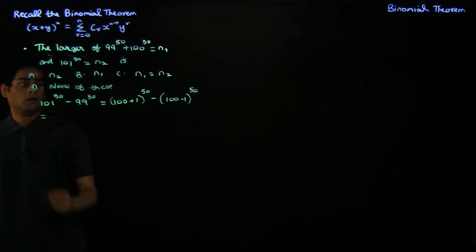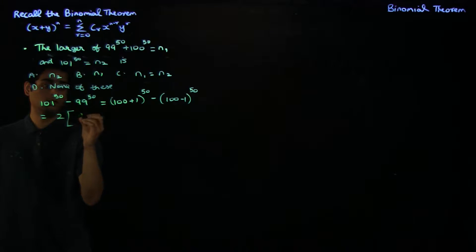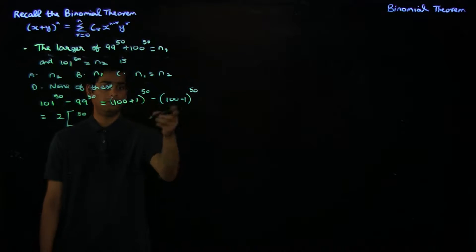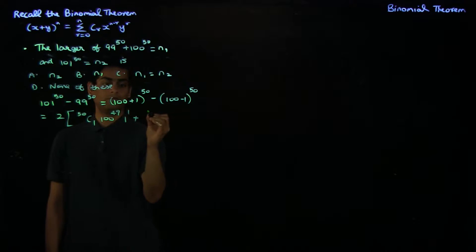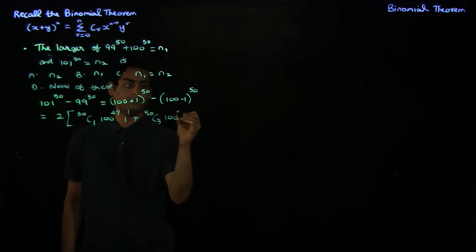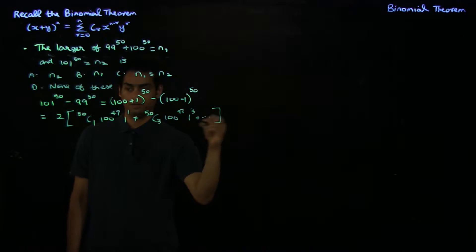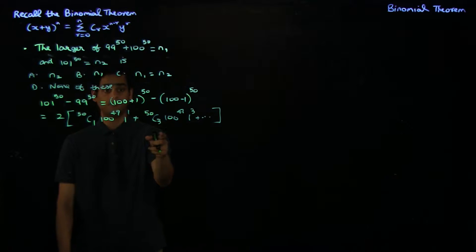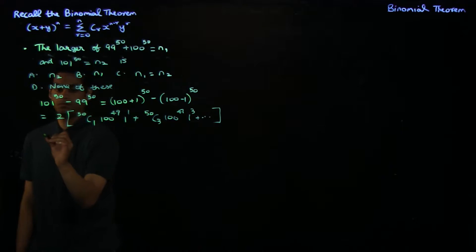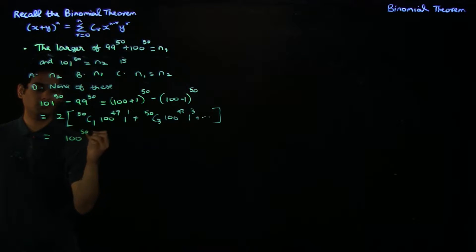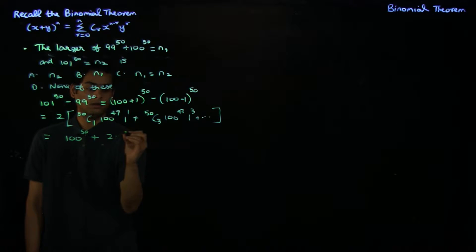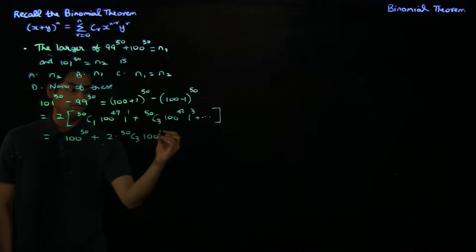Using the binomial theorem, this evaluates to 2 times 50c1 times 100 power 49 times 1 power 1, plus 50c3 times 100 power 47 times 1 power 3, and so on, continuing until 50c49. These are the only terms which remain when you subtract the two binomial expansions. If you expand this out, it gives you 2 times 50 is 100, and 100 times 100 power 49 is 100 power 50. The first term itself is 100 power 50, and the second term is 2 times 50c3 times 100 power 47, and so on.